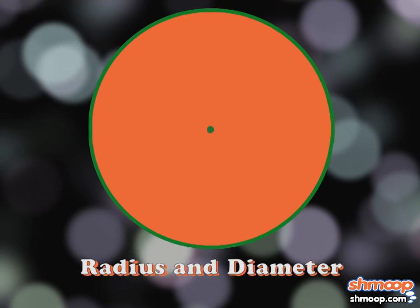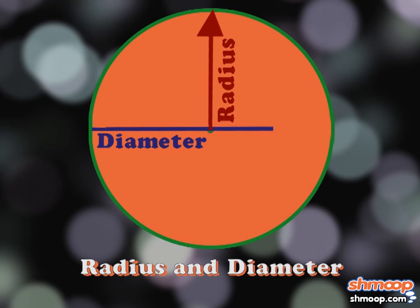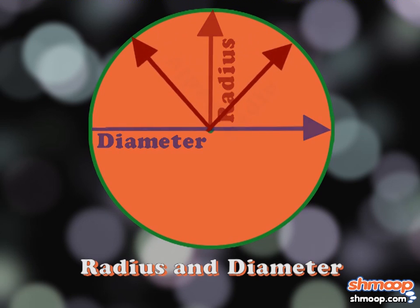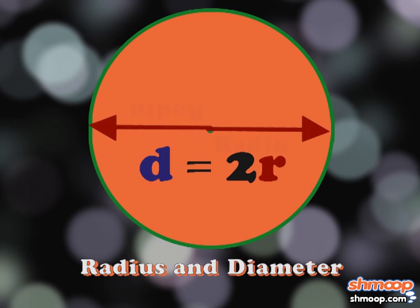A circle's radius is the distance from its center to the outside, and its diameter is the distance from one side of the circle all the way to the opposite side, or, simply put, two times its own radius. How much simpler could it be?